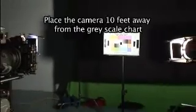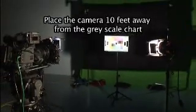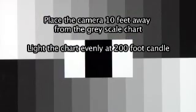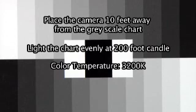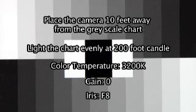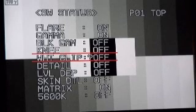First, place the camera 10 feet away from the grayscale chart. Then light the chart evenly at 200 foot candles. Make sure you use light with a color temperature of 3200K. Now set the gain to 0 and set the iris to f8 and frame the chart accordingly. Now go inside your camera menu and turn off the knee and clip for an exact measurement.